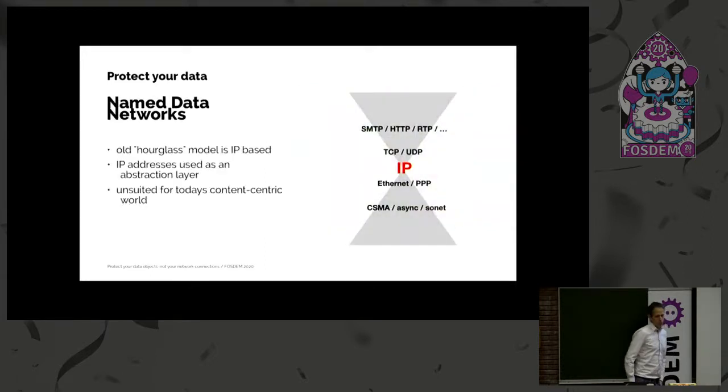There's a second concept named data networks that we find very interesting. In the old world, we are used to the so-called hourglass model. So we centered everything around our IP connections. And on this IP connection, on this IP address, I know that there is a certain data type or a certain resource. So everything has to go through this IP and we need to address IPs and so on. And this is our abstraction layer, the IP address is our abstraction layer. But for our data centric world, it's not suitable anymore.